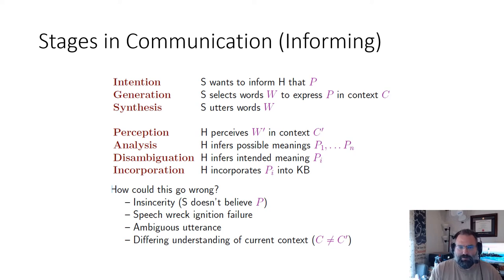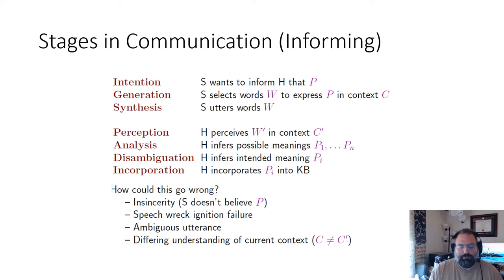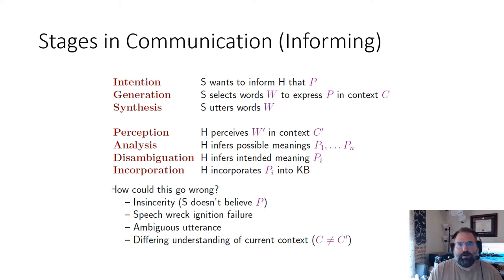How can things go wrong? There are all kinds of ways. The speaker may not believe what they're saying — they could be insincere or lying. There could be a problem getting the conversation started, the wrong words might be selected, or there could be ambiguity in the words the speaker chooses to express their communication. There may also be different understandings of the context — people see things from their own perspectives, so the context of the speaker may not be viewed the same as the context of the hearer.